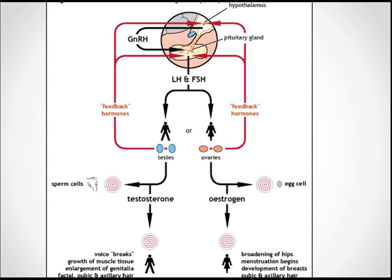Estrogen is produced by the follicle cells of the ovary. The active form of estrogen is estradiol — that's very important. It circulates bound to SHBG, sex hormone-binding globulin, and causes growth of the breast and uterus, the female distribution of adipose tissue, and an increase in bone mineralization.